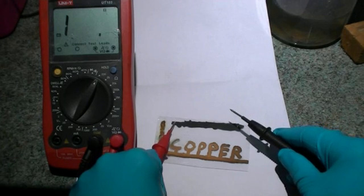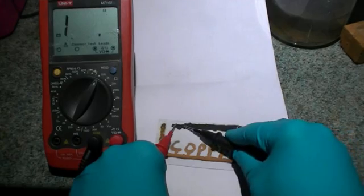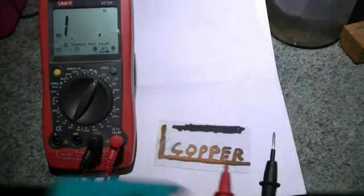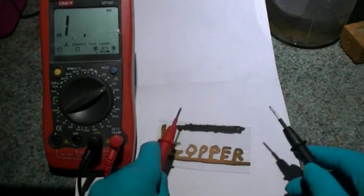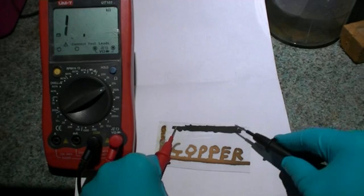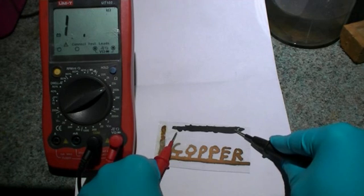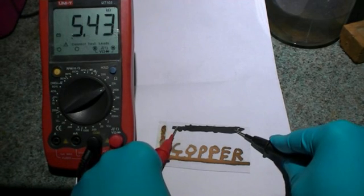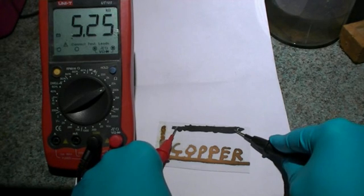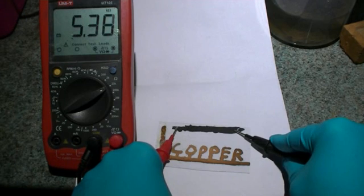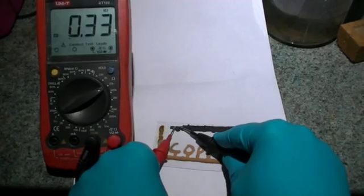If we compare the conductive graphite paint strip, after changing the scale of the multimeter to make it more sensitive, the end-to-end resistance is around 5 kilo-ohms. That's more than 5,000 times the resistance that we've measured across our copper. The closer we move our probes on our conductive graphite paint, the lower the resistance.